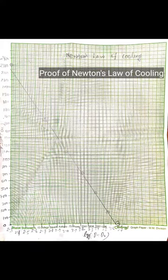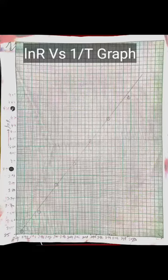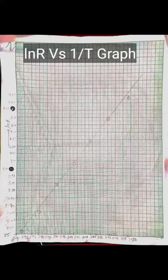Conclusions: The straight line graph between log T₂ and time T verifies Newton's law of cooling. The straight line graph between log R and 1 slash T indicates that the thermistor can be used as temperature sensor. Thank you.